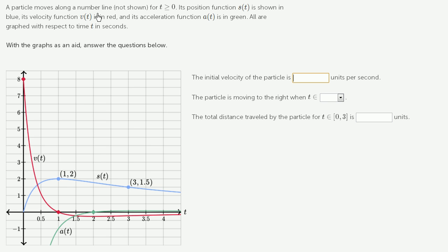A particle moves along a number line, not shown, for t is greater than or equal to 0. Its position function s of t is shown in blue. So this is its position as a function of time. Its velocity function v of t is in red. That's velocity. And its acceleration function a of t is in green. All are graphed with respect to time t in seconds. With the graphs as an aid, answer the questions below.